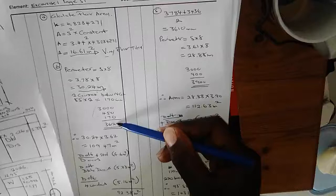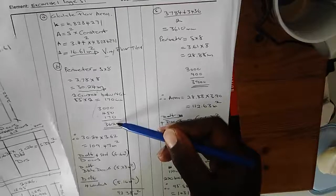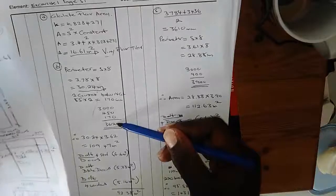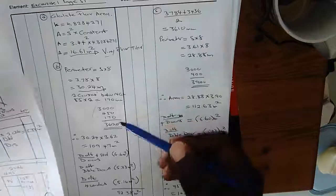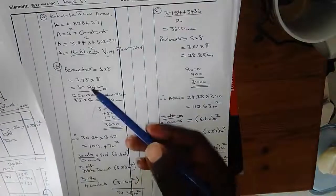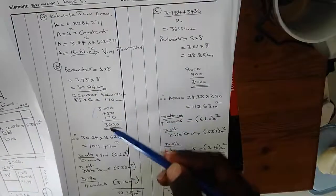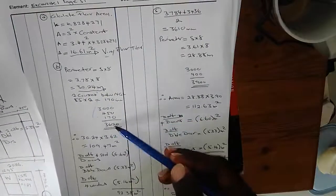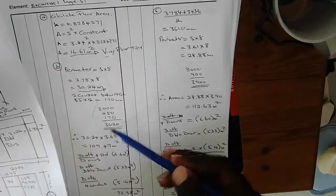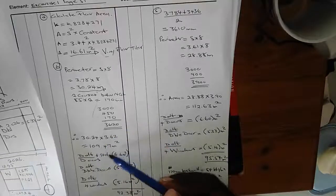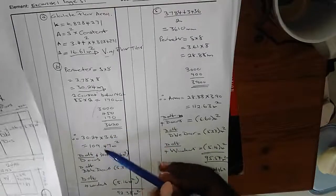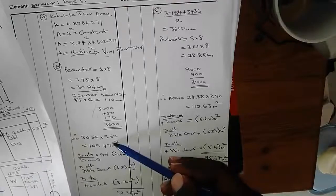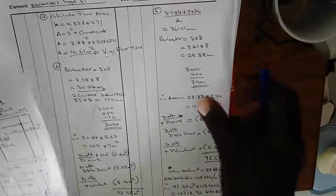Plaster is measured in square meters as per standard, so we need two dimensions. We say 30.24m times 3.620m — when you multiply that out you get 109.47 square meters.